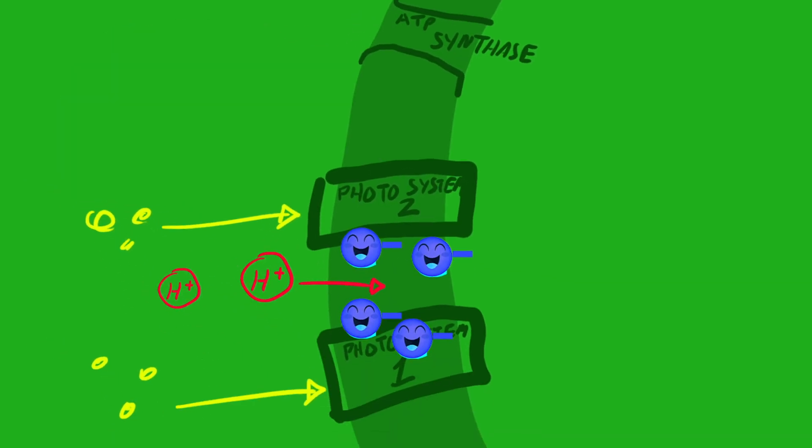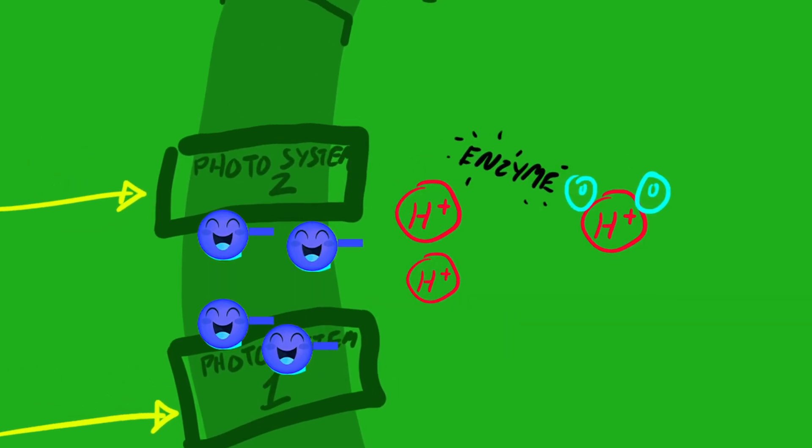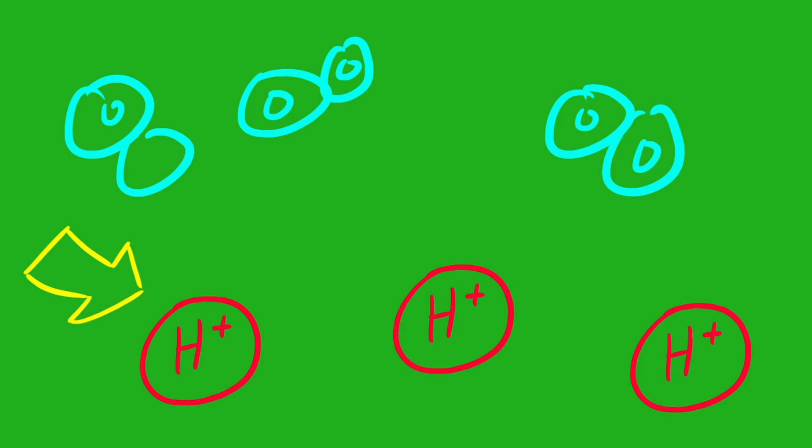The stroma is the stuff surrounding the thylakoid. Enzymes break water molecules into their constituent parts: hydrogen and oxygen. Hydrogen is kind of cool, so we'll hold onto that. But this oxygen, we kind of have to get rid of. How are we gonna get rid of all this oxygen?